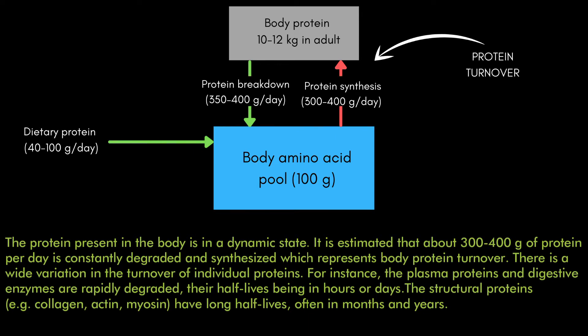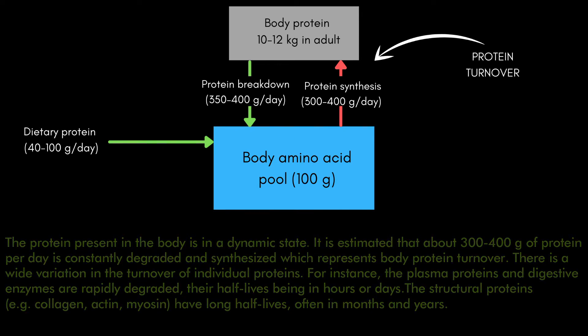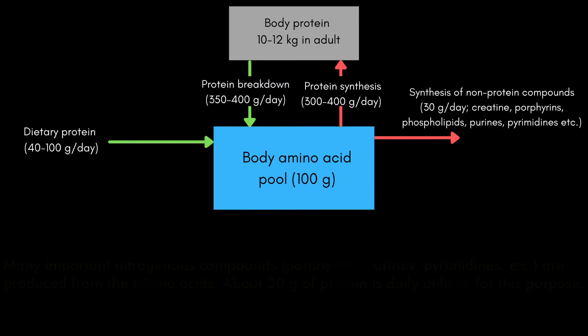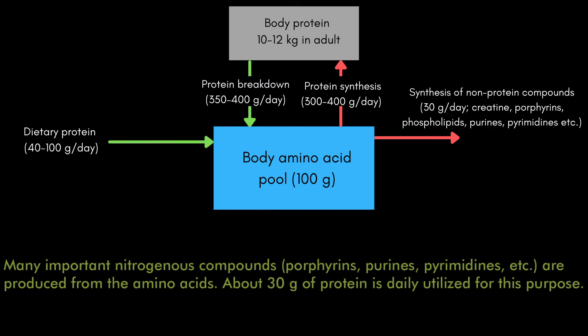This is why we have to consume a certain amount of protein depending upon physical demands. The next function using amino acids from the pool is the synthesis of non-protein nitrogenous compounds — such as creatine, phospholipids, purines, and many others. These compounds require nitrogen, which is exclusively provided by amino acids, so some amino acids leave the pool specifically to synthesize these compounds.